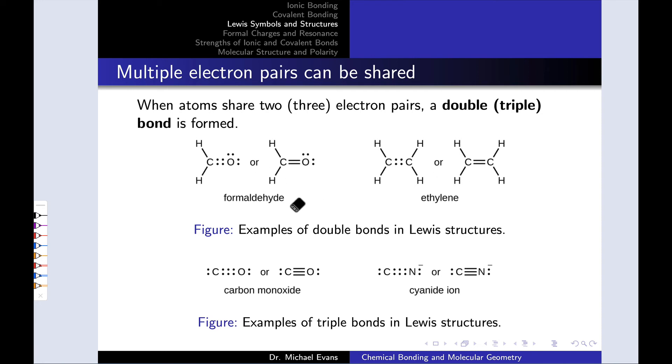Here, for example, we see two examples of double bonds where carbon and oxygen here are sharing four electrons, and carbon and carbon here are sharing four electrons total. So two pairs of electrons shared, that is a double bond, and we represent these in the line formalism by using two lines, where each of those lines represents a pair of electrons.